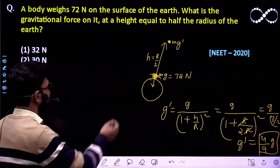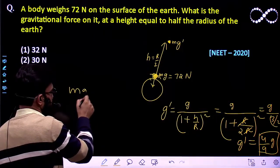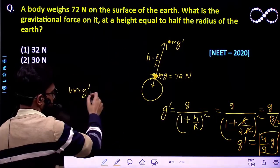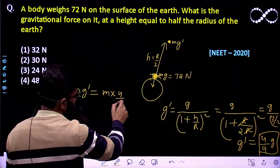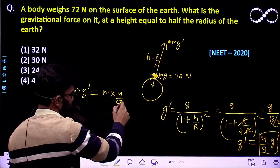So what would be the weight? Weight is nothing but m into g dash over there at certain height. So this is m times 4 by 9 g.